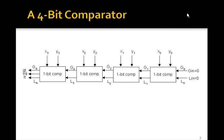Now, we can use four of these and cascade them together in this fashion. So x is x3, x2, x1, x0, a 4-bit x, and we're comparing it with a 4-bit y, y3, y2, y1, y0. Notice that G and Lin both start at 0.